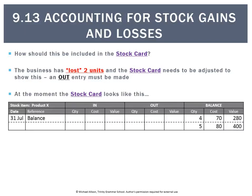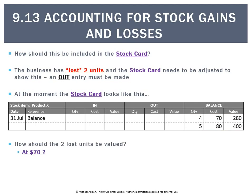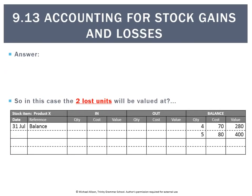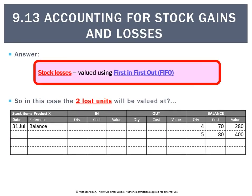If we have the following stock card, at this point we've got 4 units at $70 and 5 units at $80. That's 9, but we actually did a count and there's only 7. So we've got to get 2 out of there. Which 2 do we take — the $70 ones, the $80 ones, or maybe average it out at $75? We need a rule, and that rule for a stock loss is it will always be valued at FIFO.